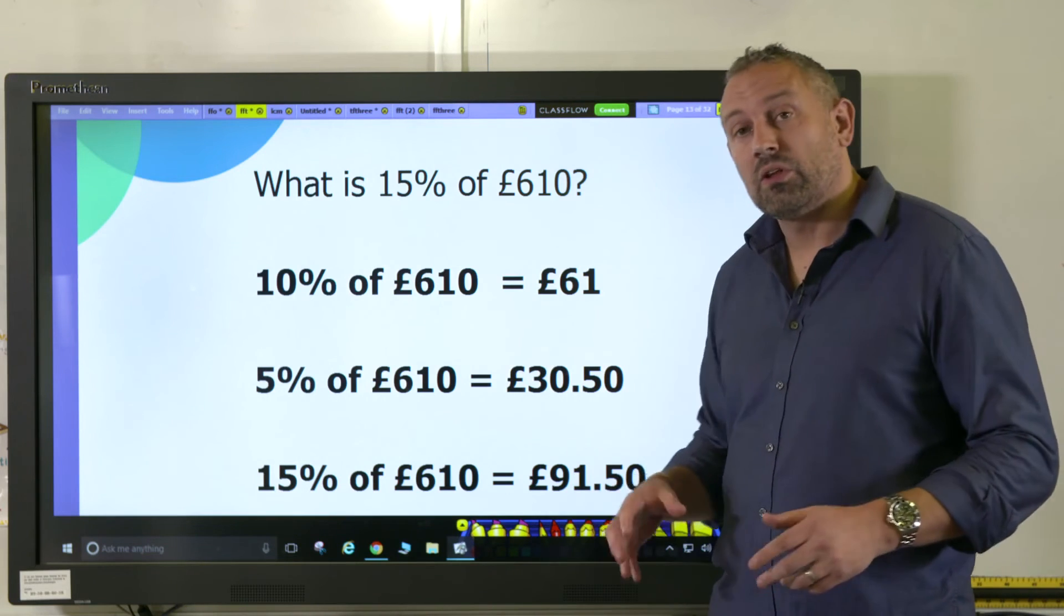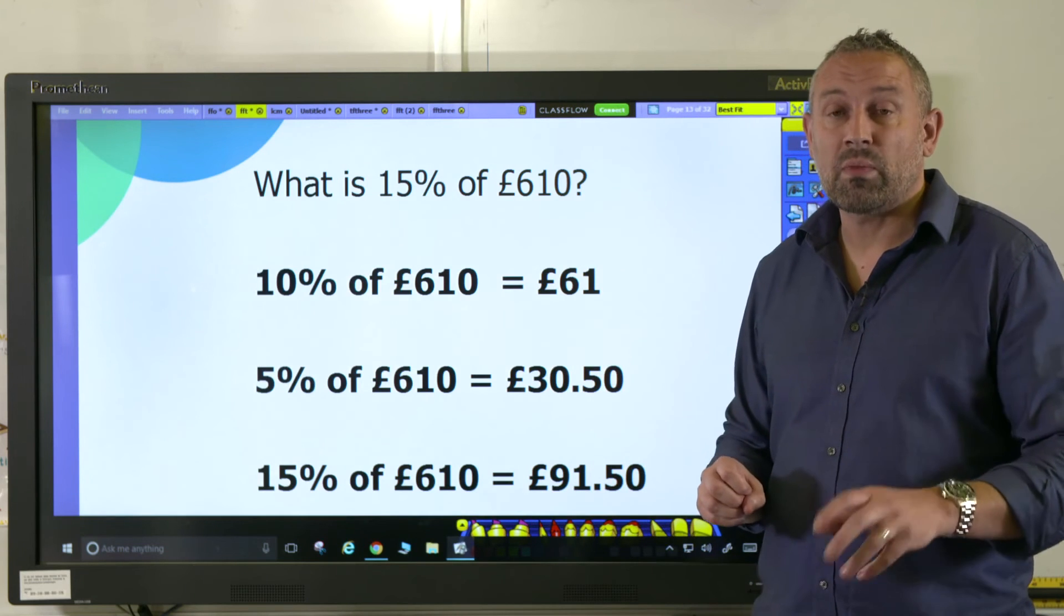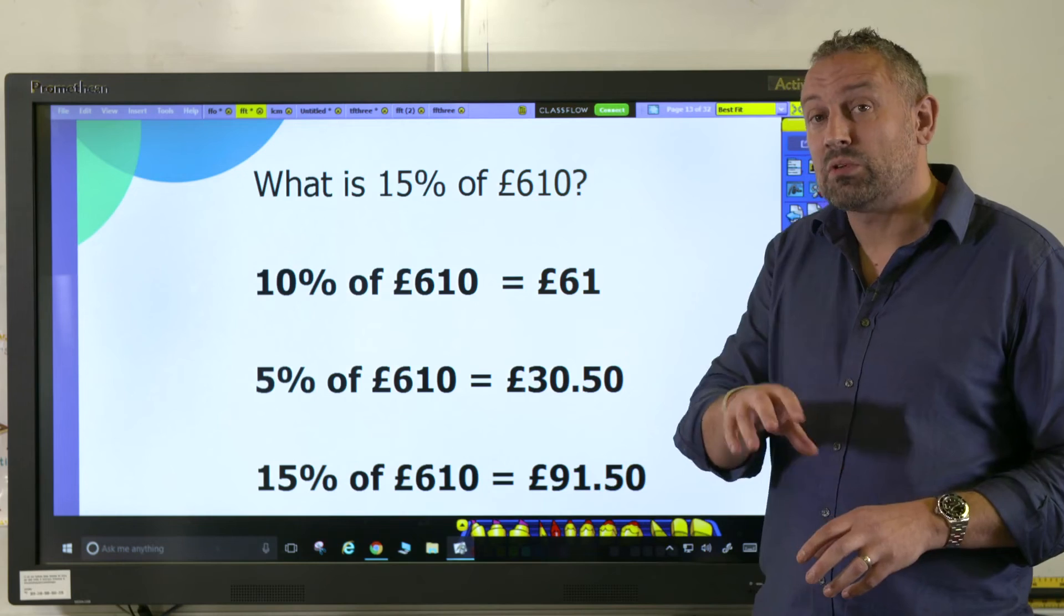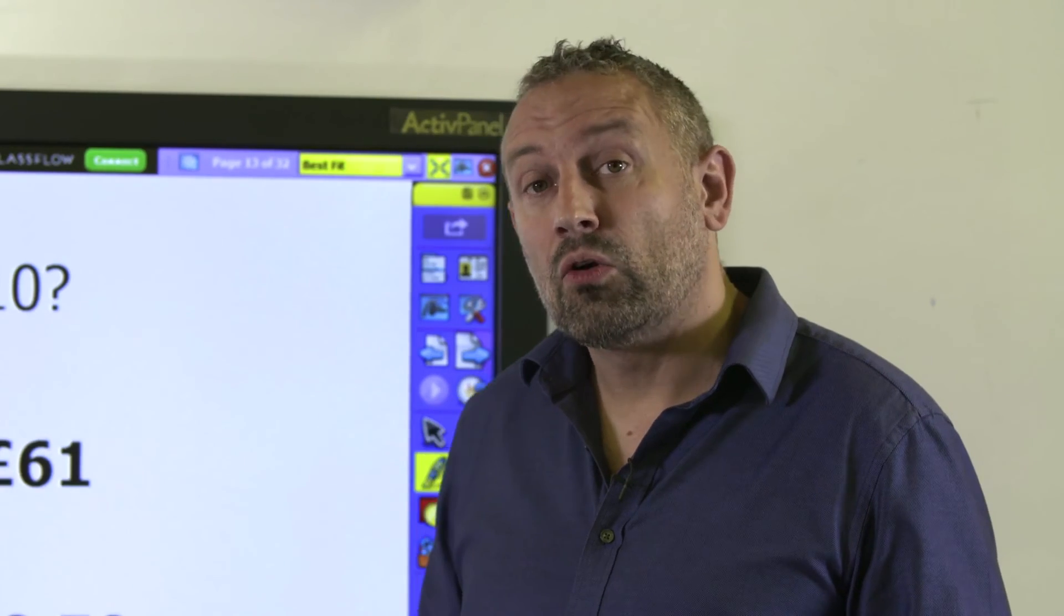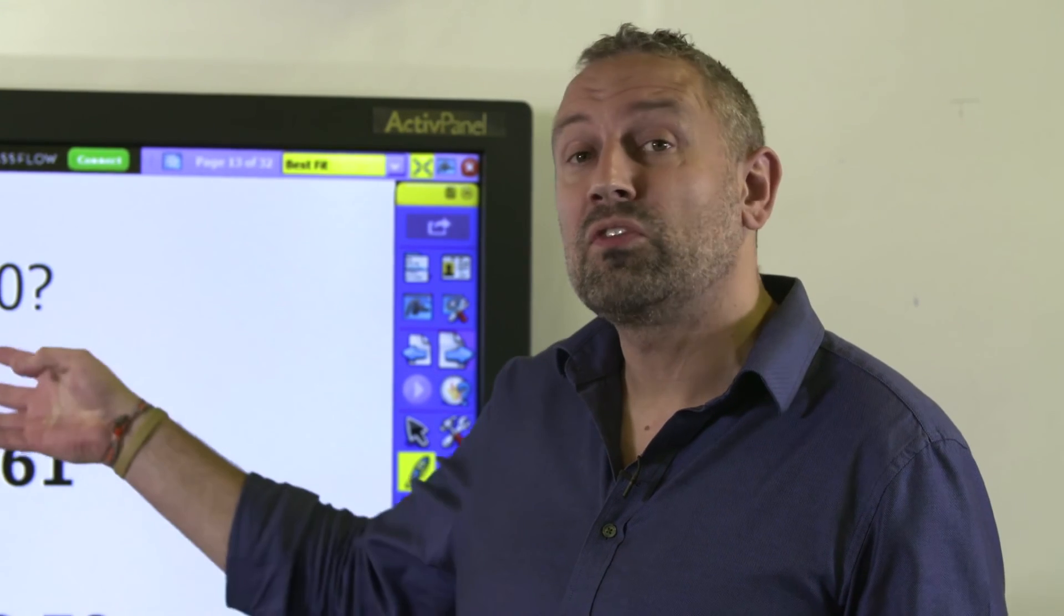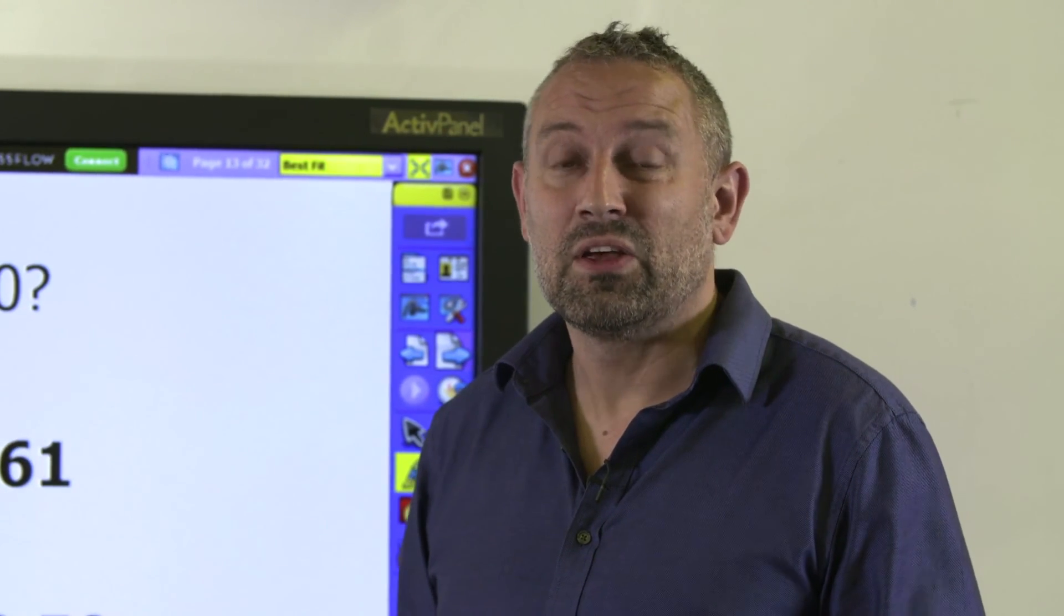It's really important that when teaching this to children, they can use a variety of methods. Bar models are really helpful, but you can also relate it to decimals and percentages. While finding 10 percent is key, sometimes other methods are quicker. For example, if we were finding 50 percent or 25 percent, finding 10 percent isn't always the fastest approach. To find 50 percent, you could just halve the amount, but that's where you would openly discuss that with the children.